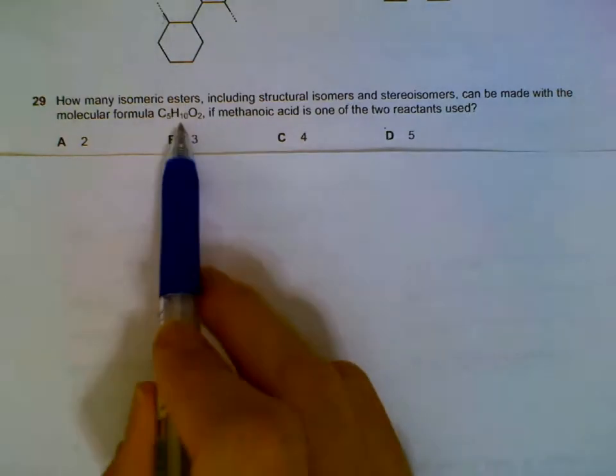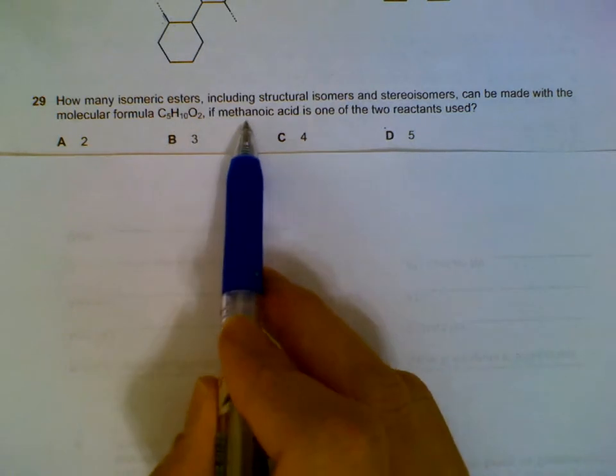Question 29: How many isomers of esters can we have from C5H10O2 if methanoic acid is one of the two reactants used?